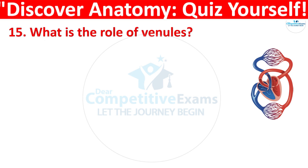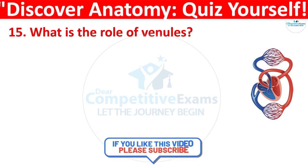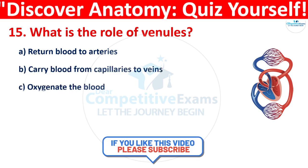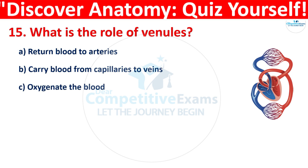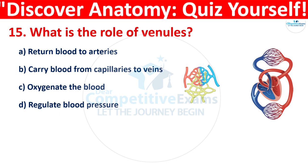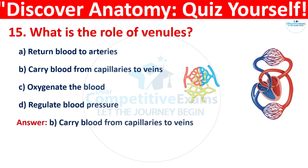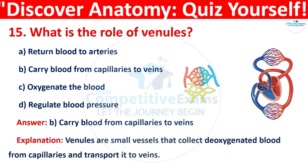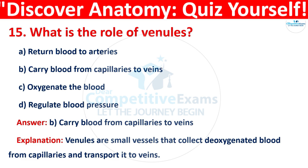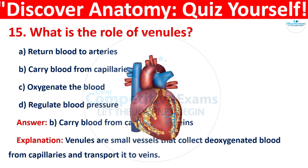Question 15: What is the role of venules? Your options are: return blood to the arteries, carry blood from capillaries to veins, oxygenate the blood, or regulate blood pressure. The correct answer is B, that is to carry blood from capillaries to veins. Venules are small vessels that collect deoxygenated blood from capillaries and transport it to veins.